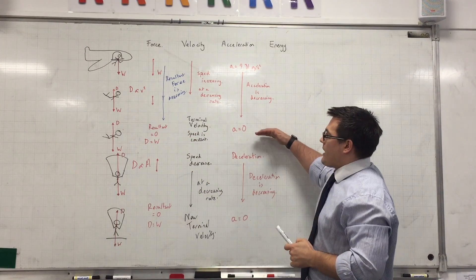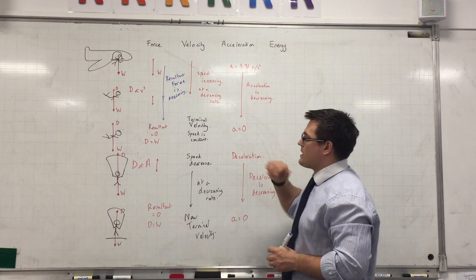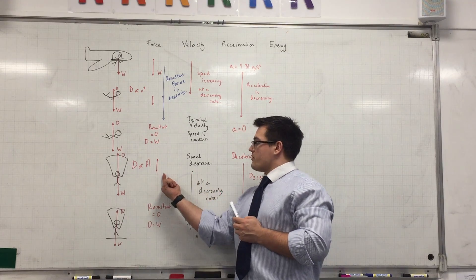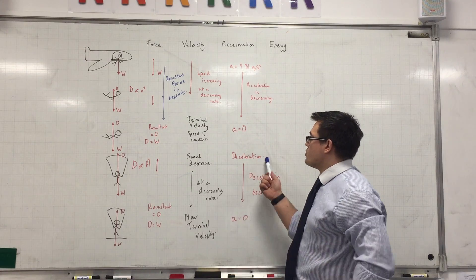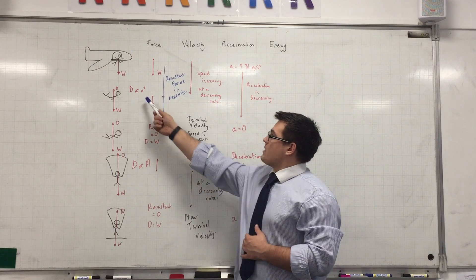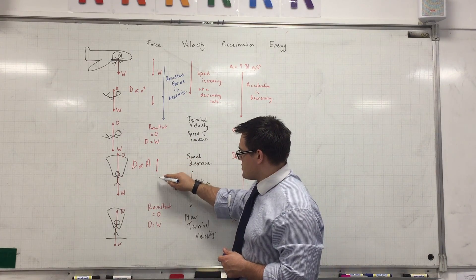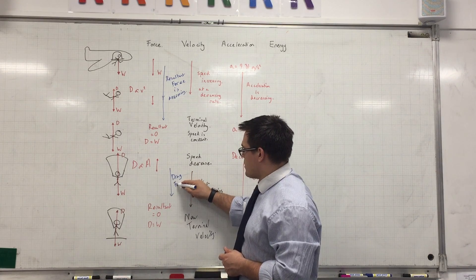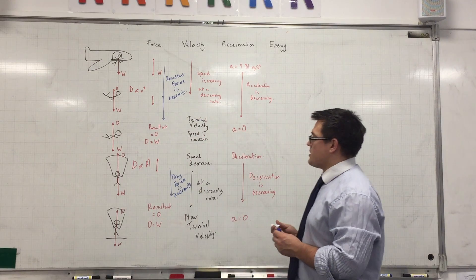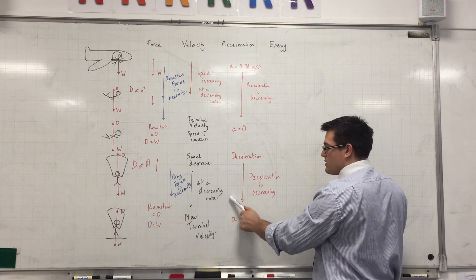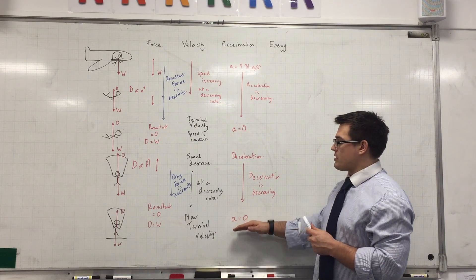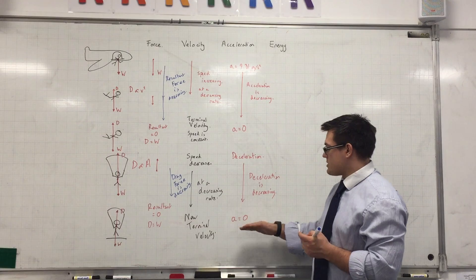You keep falling at terminal velocity at constant speed until you open your parachute, increasing your drag force by increasing your area. That causes a resultant force upwards because the drag force increases, which causes you to decelerate — your speed decreases. But because your speed is decreasing, your drag also decreases. Between these two stages the drag force is decreasing and therefore the resultant force is again decreasing. Your speed decreases but at a decreasing rate — you're decelerating, slowing down by less and less each second — until you reach a new terminal velocity where weight equals drag again and acceleration is zero.